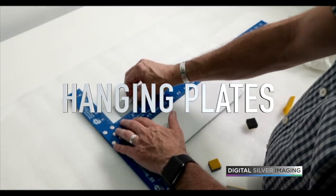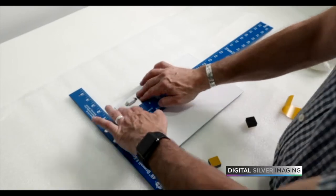In this example, two adhesive hanging plates are fixed to the back of a print mounted to die bond.